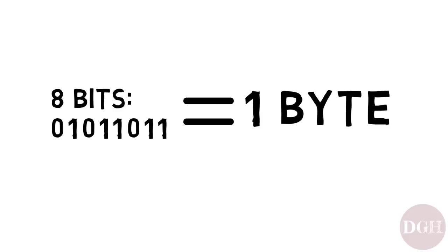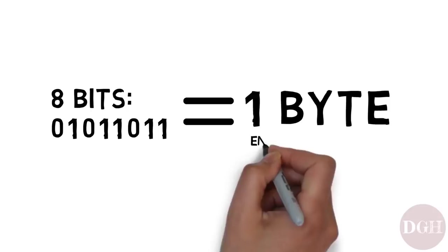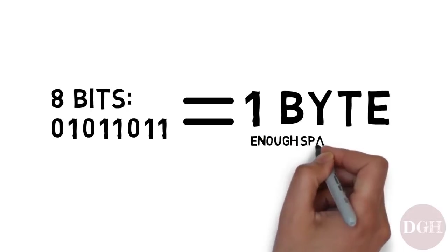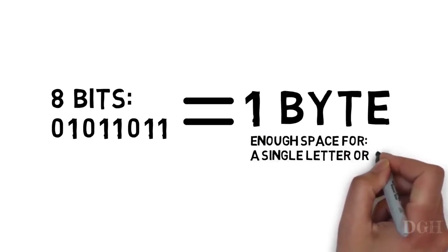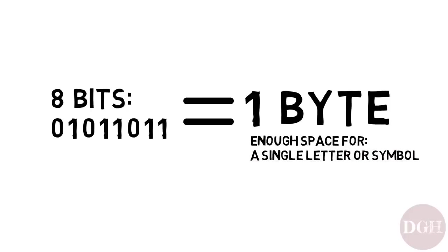In everyday terms, you can think of one byte as the amount of space it takes to store one single letter or symbol in a text document. So, if you wrote a short story with a thousand words, this would require about a thousand bytes of storage space.